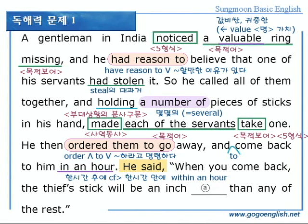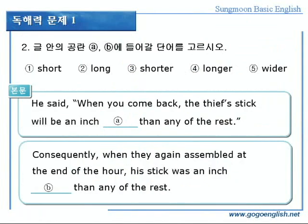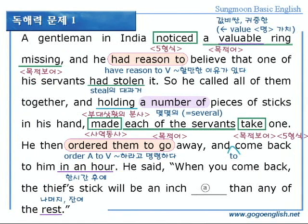계속합시다. he said, 그가 말하기를, when you come back, 너희들이 돌아올 때면, the thief's stick, 도둑의 막대기는, will be an inch blank, 1인치가 blank할 것이라고, than any of the rest, 나머지 막대기보다 1인치 더 blank할 거라고 말했다. 자, 빈칸에는 아직 뭐가 들어갈진 모르지만, 뒤에 than으로 봐서 반드시 비교급이 들어가야 한다는 것은 파악하셨죠? the rest는 나머지 잔여란 뜻으로, 도둑의 막대기를 제외한 나머지 막대기를 말하고요. than any of the rest는, 나머지 막대기의 어느 것보다도, 라는 의미가 됩니다.